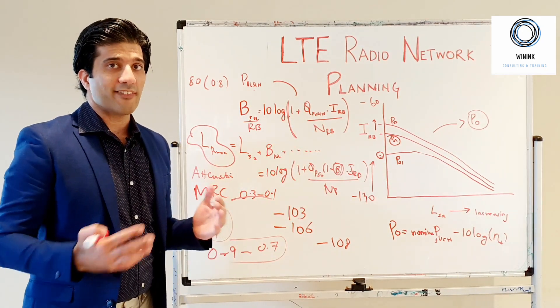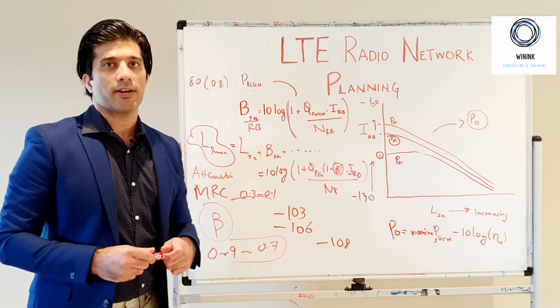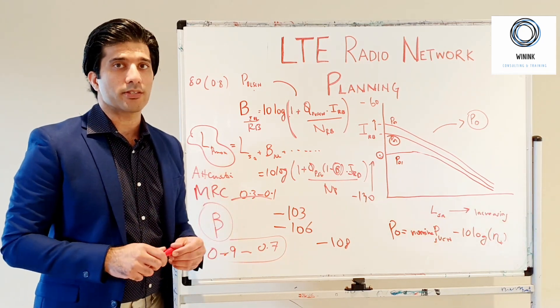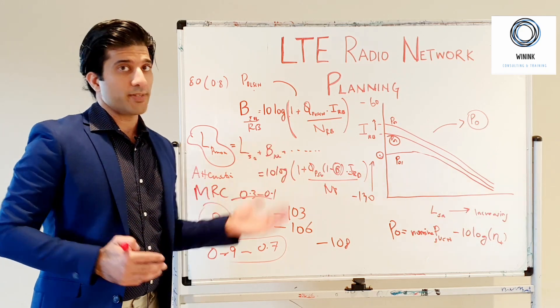Noise rise value and margin also depend on the type of combining you're using in your receiver side, that is your Node B side.